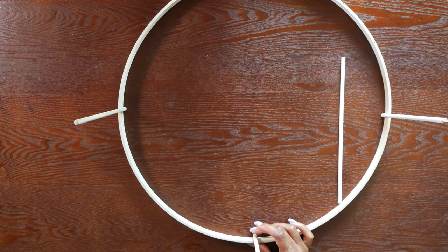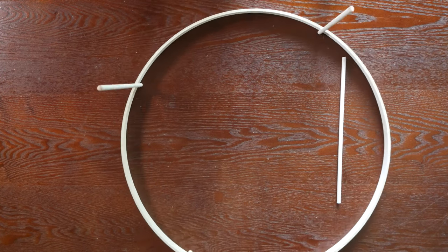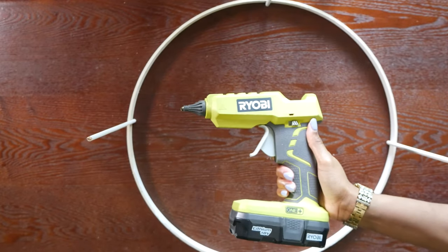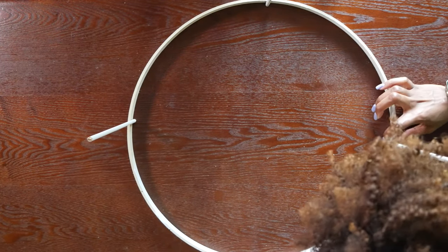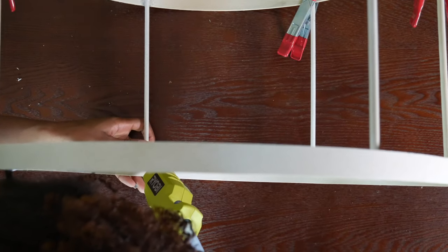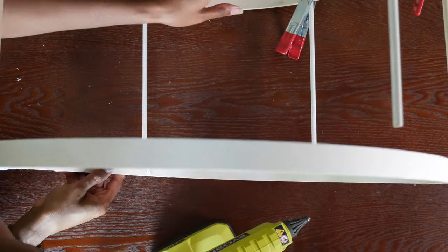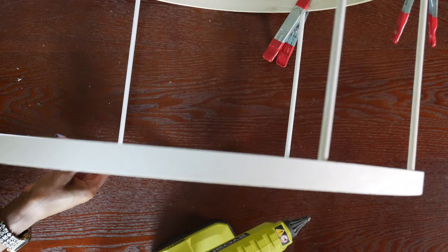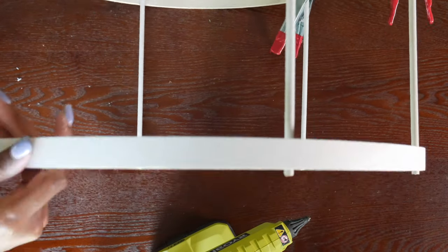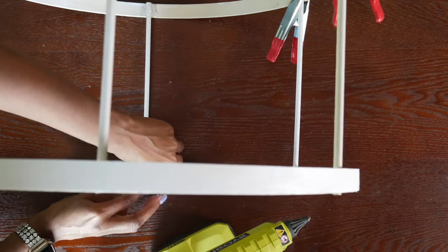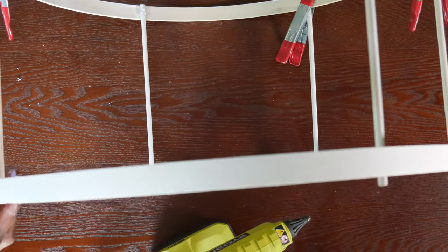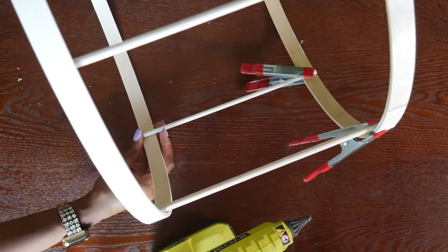Now we can start on construction. We're going to glue our dowels first. You guys see me use E6000 glue and now I'm pulling out my trusty hot glue gun. Do not use E6000 unless you really want to wait a long time and carefully tape everything down.